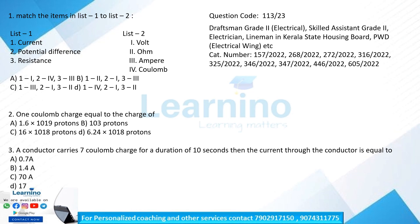In list 1 we have: current, potential difference, and resistance. In list 2 the units are called volt, ohm, and ampere. Matching the following: current unit is called ampere, potential difference is volt, resistance is ohm.